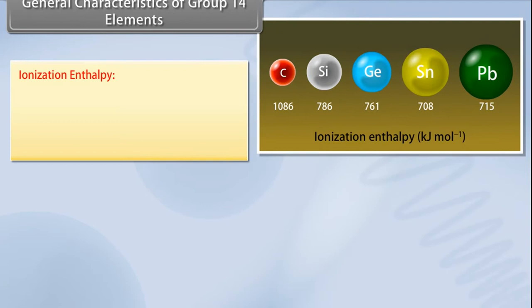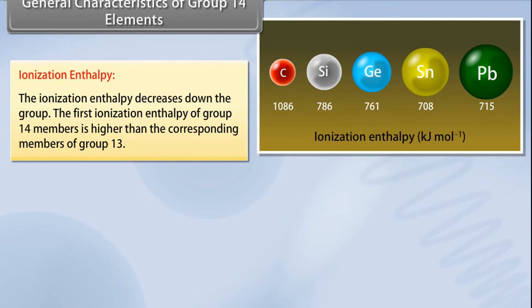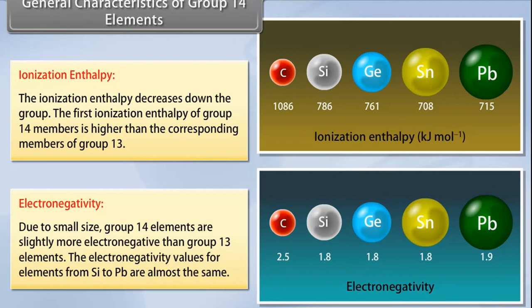Ionization enthalpy decreases down the group. The first ionization enthalpy of group 14 members is higher than the corresponding members of group 13. Due to small size, group 14 elements are slightly more electronegative than group 13 elements. The electronegativity values for elements from silicon to lead are almost the same.